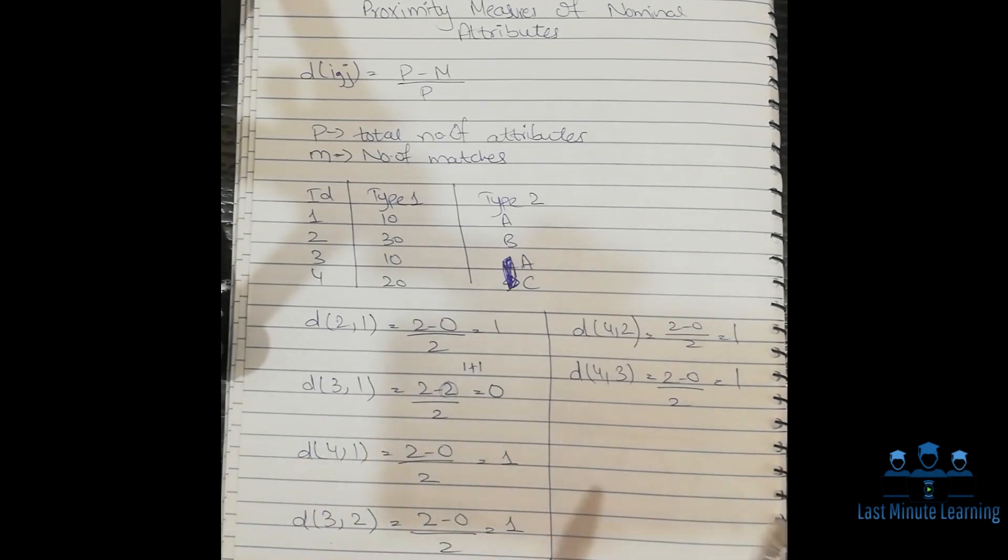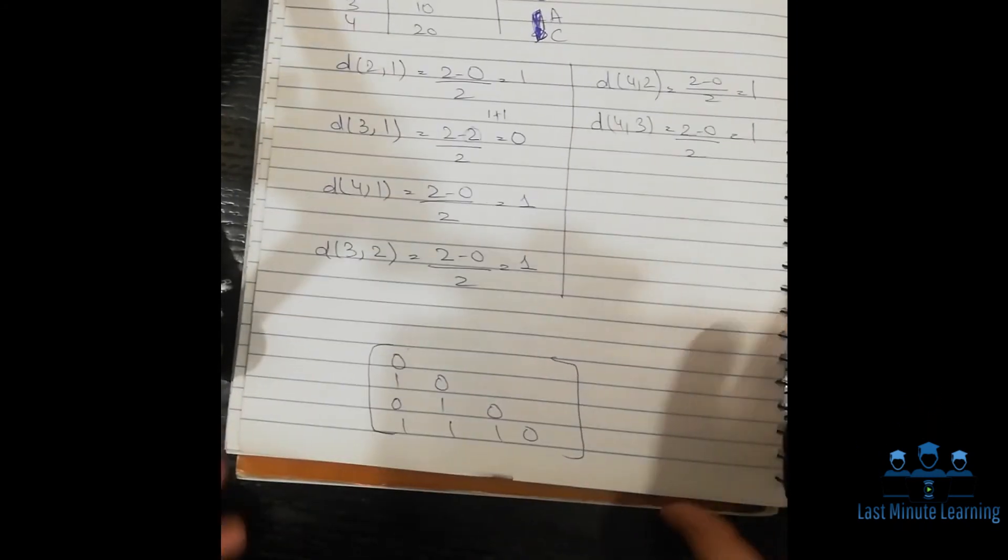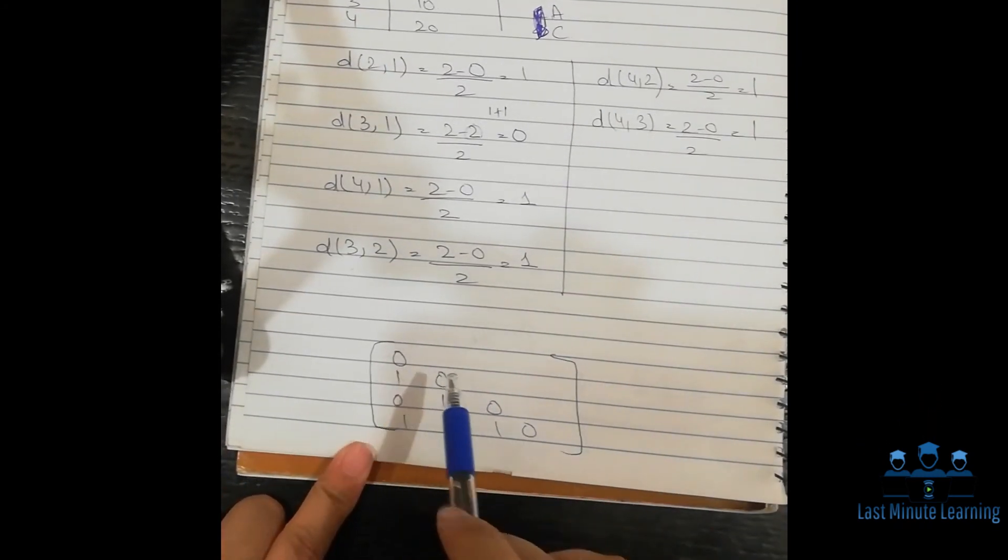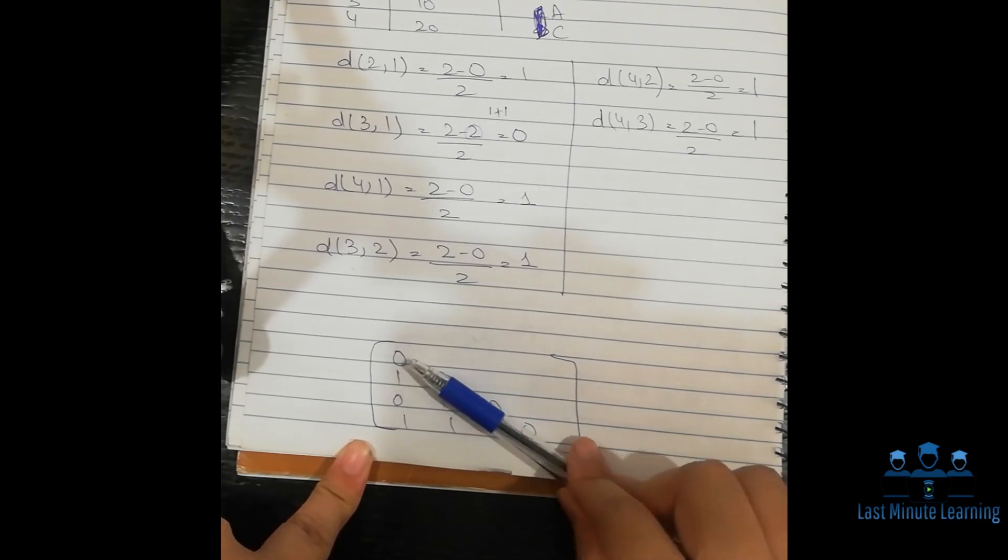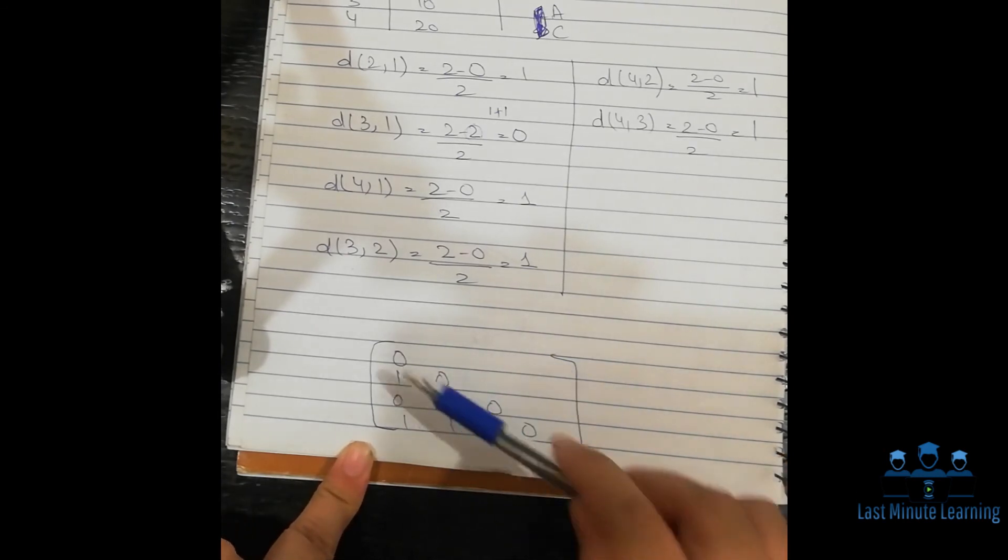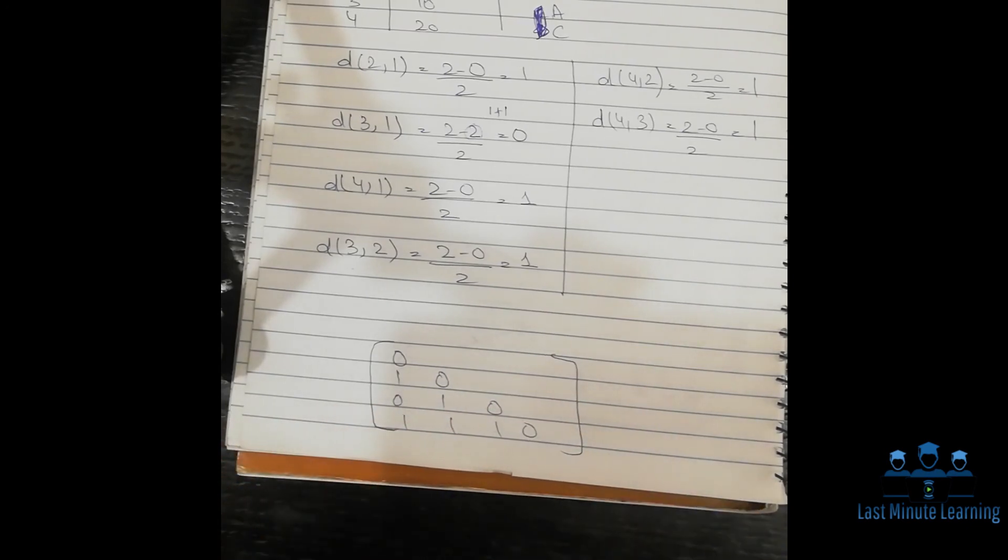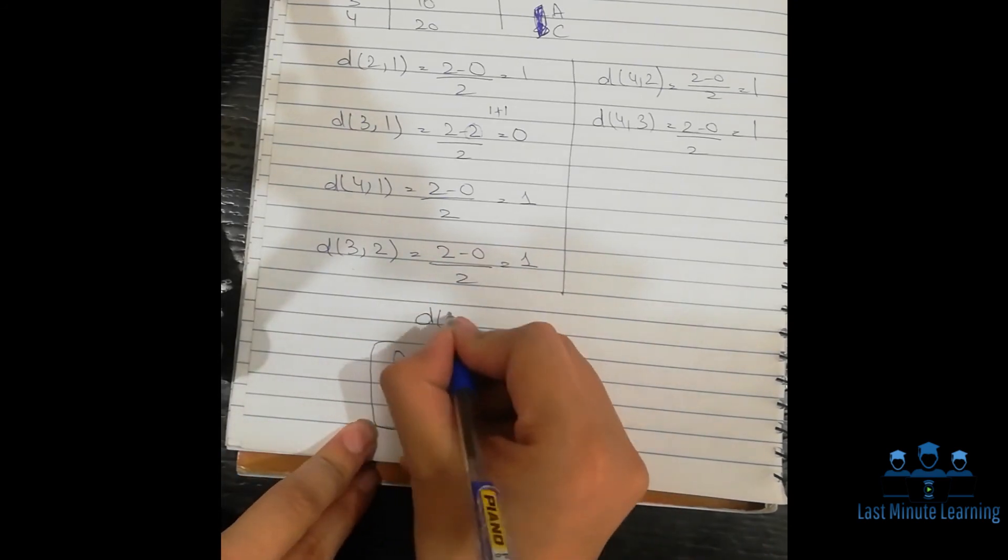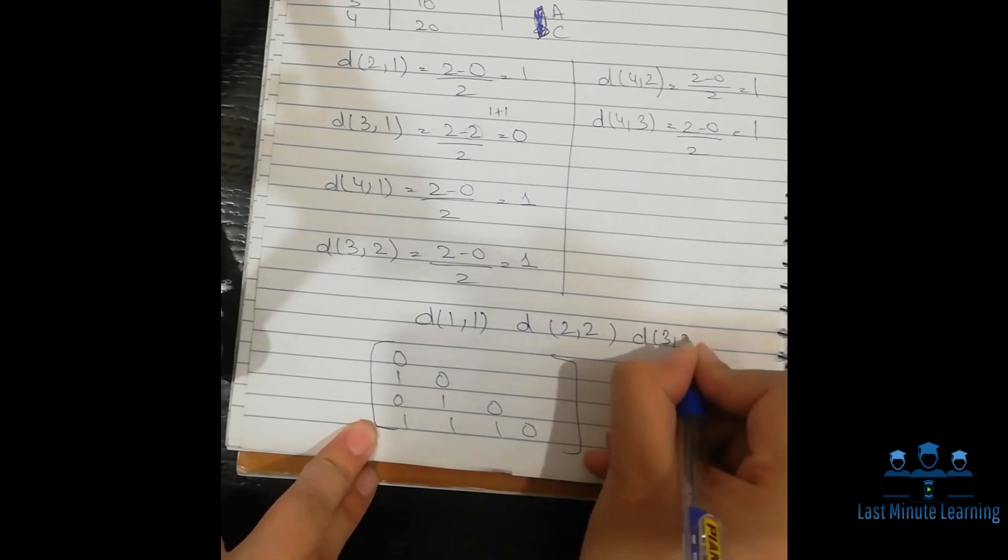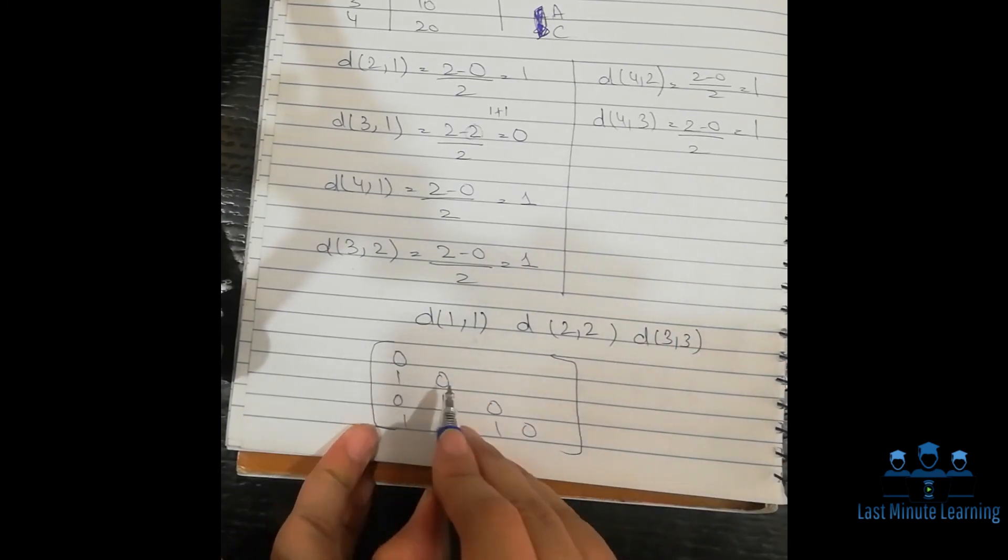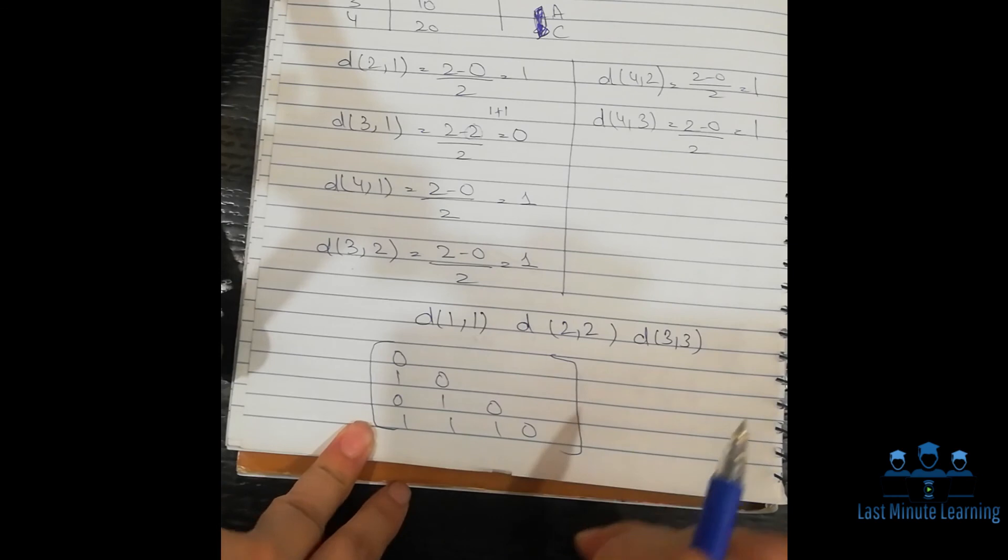Then we will get a matrix in this form, the dissimilarity matrix. This matrix reflects the same values symmetrically, and it is diagonally zero. As we know, there cannot be any difference between d(1,1), d(2,2), d(3,3), and so on. So d(1,1), d(2,2), d(3,3), and d(4,4), the diagonal values are zero.